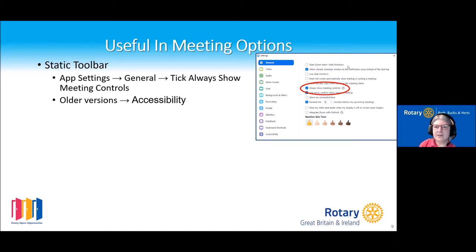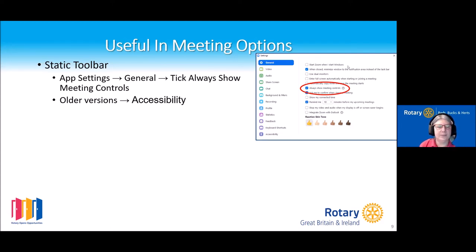The Zoom toolbar is one of those disappearing toolbars, which can be quite irritating. There is a setting where if you want that toolbar to show permanently, you can turn it on. Go into your app settings when you're in Zoom, go to general, and tick 'always show the controls.' On older versions, that option will be in the accessibility panel.